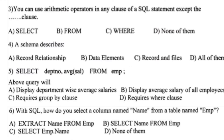You can use arithmetic operators in any clause of a SQL statement except the dash clause. Write optional — none of them. You can use all three of them in arithmetic operations.